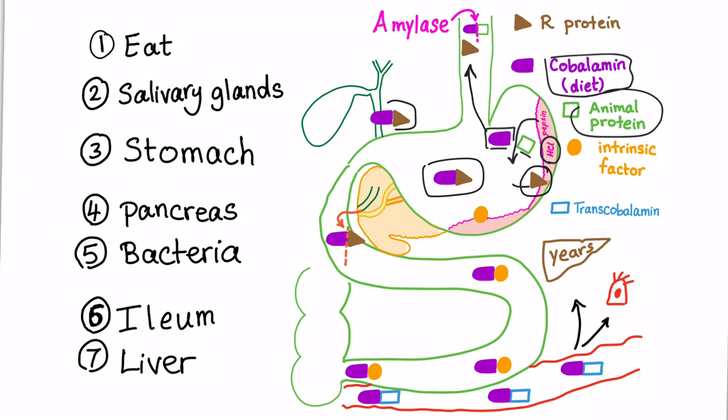Also, your nice, amazing stomach will produce intrinsic factor, which will help in the absorption of vitamin B12 at the terminal ileum. But now, let's go back to the stomach. We have B12 plus the R protein.